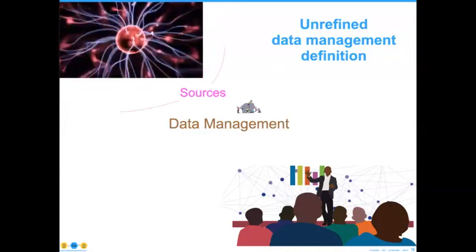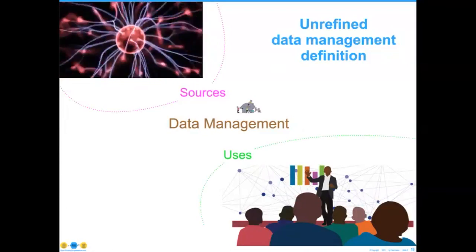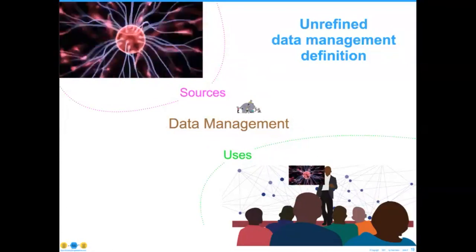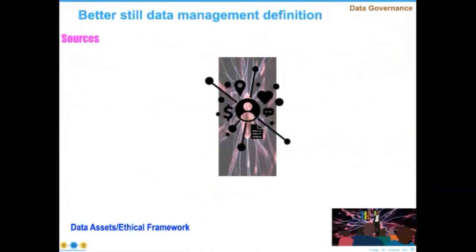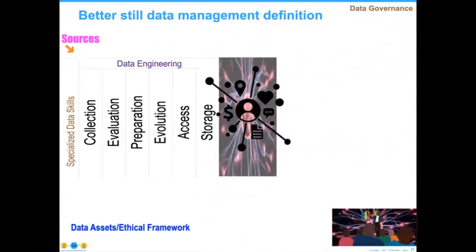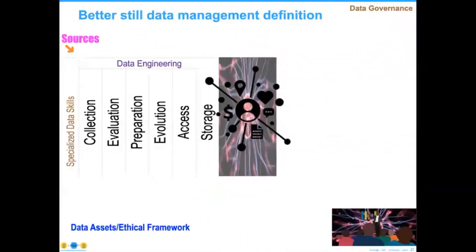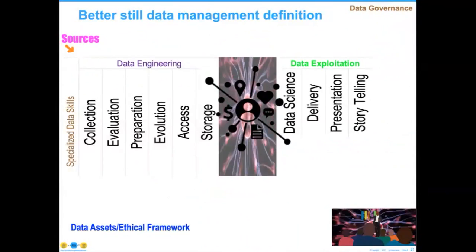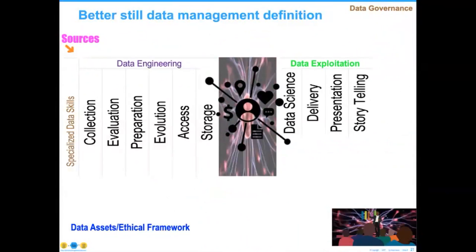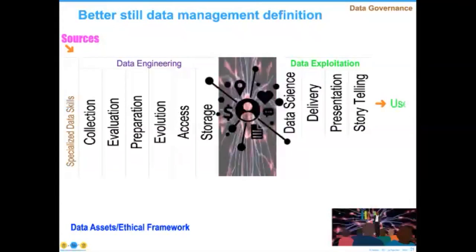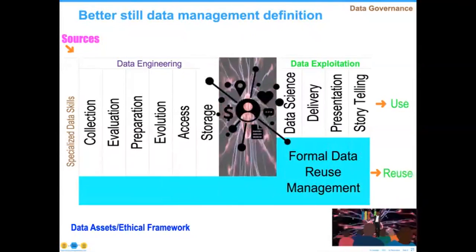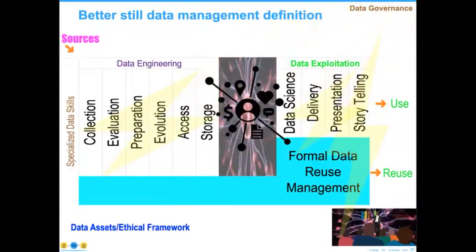We define data management as anything that happens between the source and the use of the data. That's a wonderful way to describe it, but it doesn't give anybody any directions, and it also leaves out the reuse component. Data comes in on one side, and we have all of these engineering activities. On the usage side, we have exploitation activities. One is prepare — this gets into the reuse — and we don't have those procedures as well developed as we need to. All of this should be covered by a governance and ethics program.